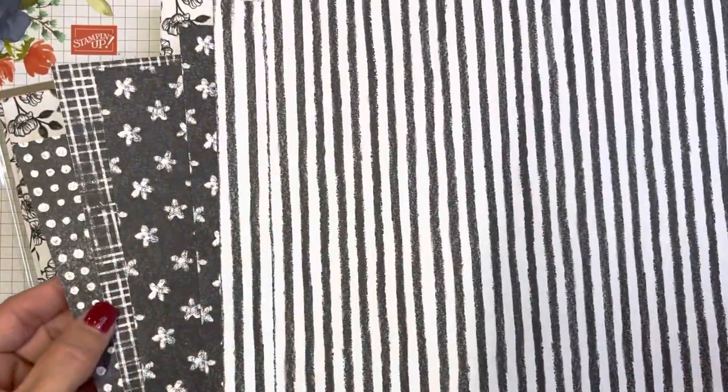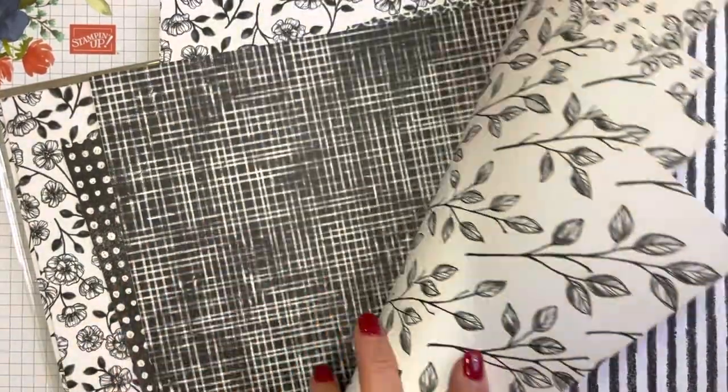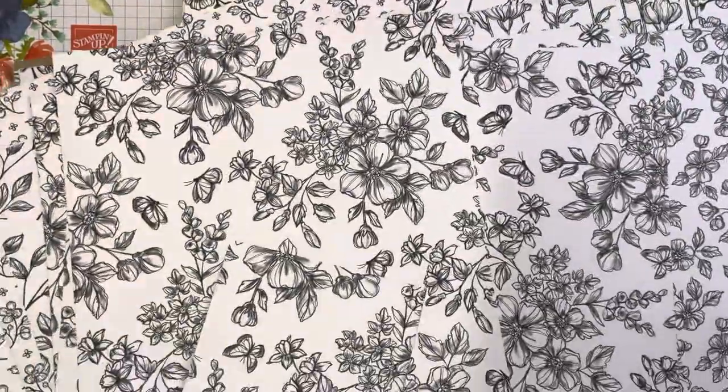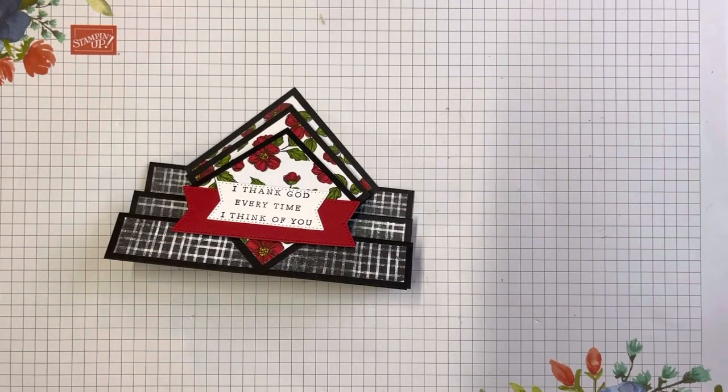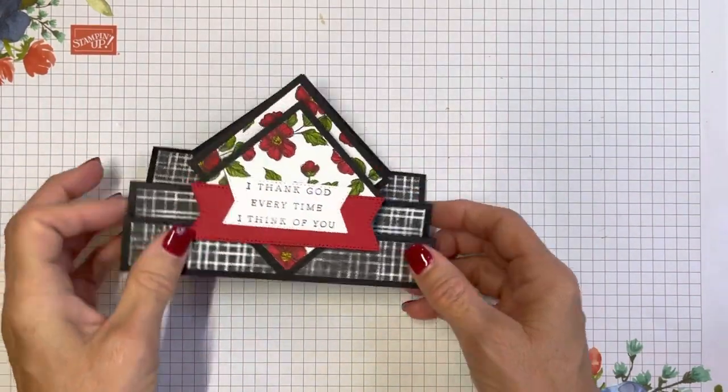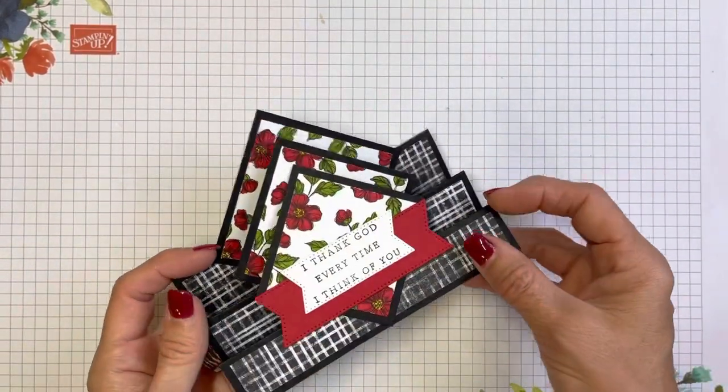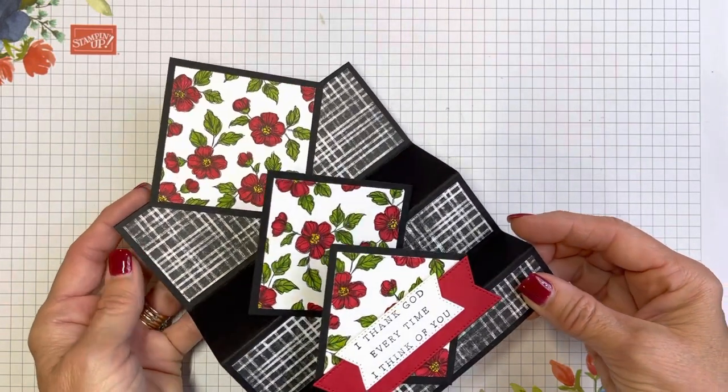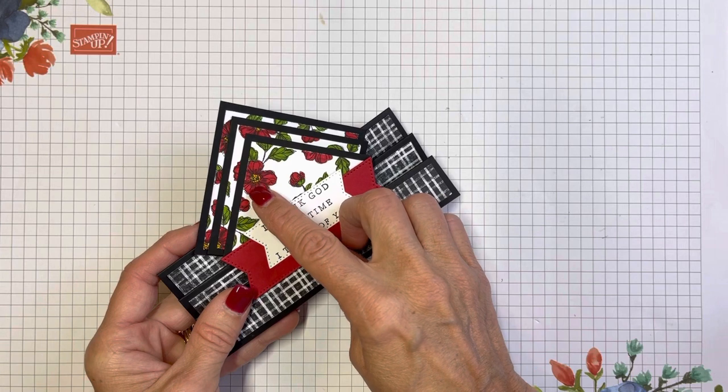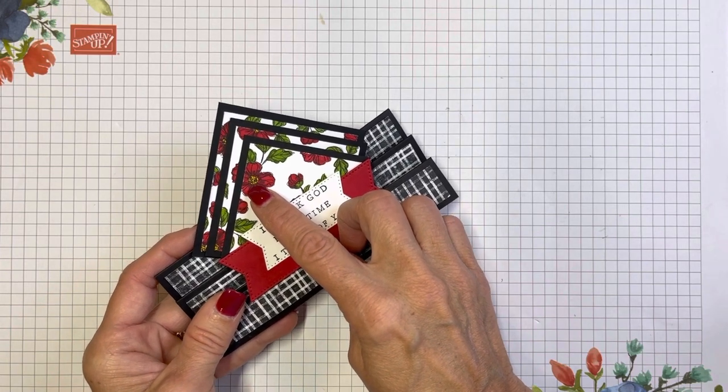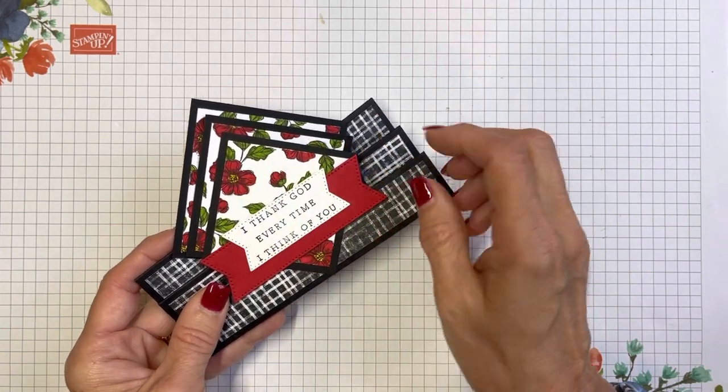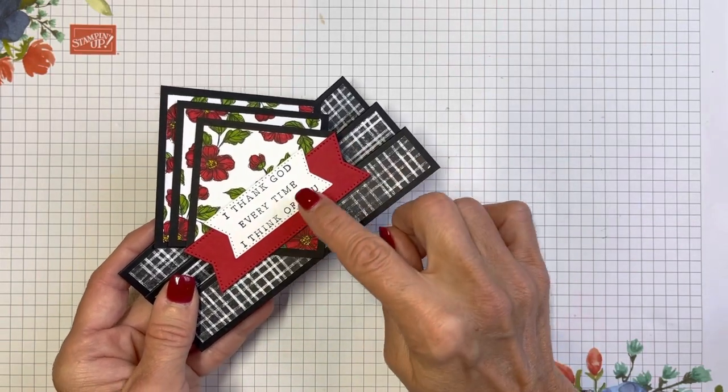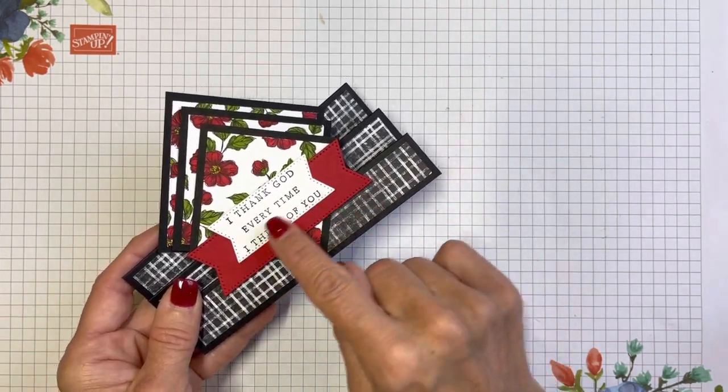I brought out my Perfectly Penciled DSP that has these beautiful hand-drawn pencil designs in black and white. The back side has all of these great black and white designs, kind of like a distressed look there. Stripes, flowers, polka dots, some cross-hatching. Really beautiful paper.